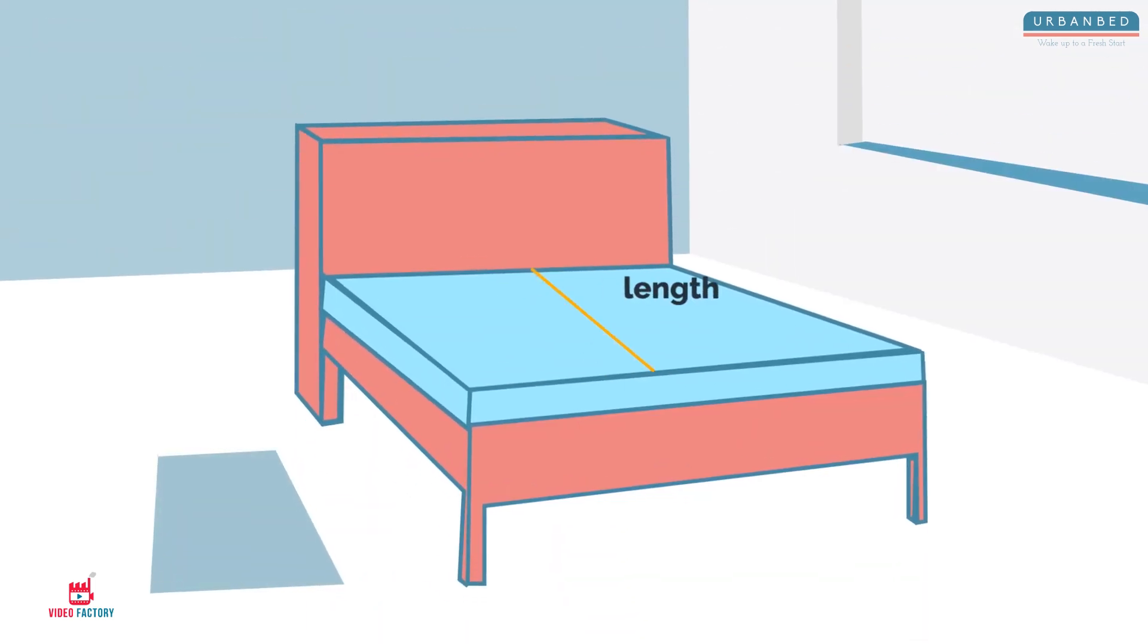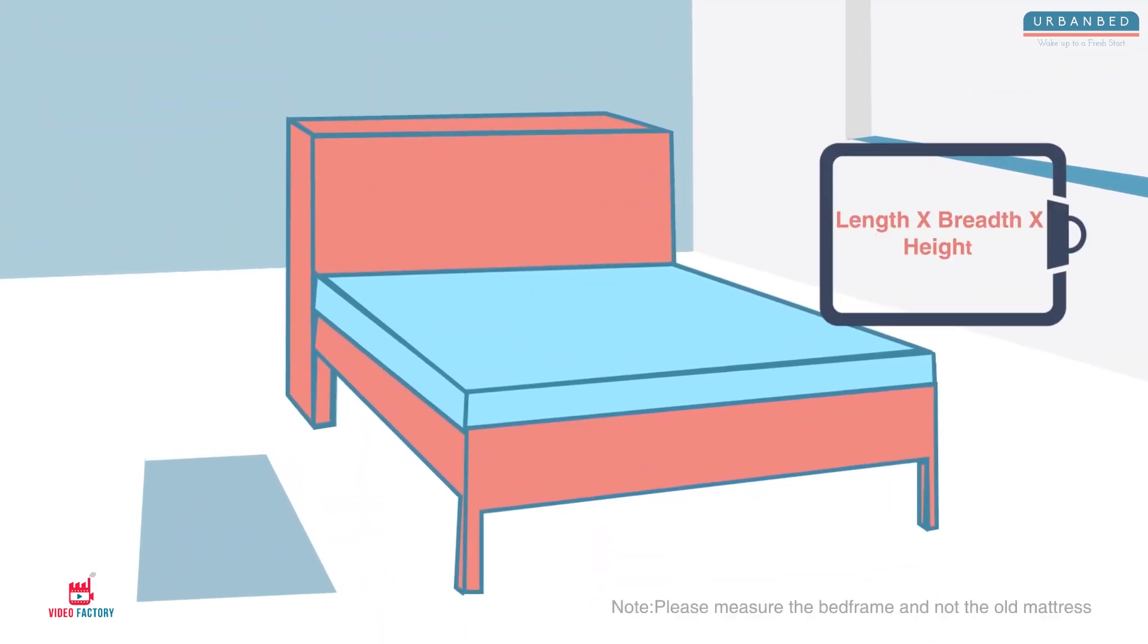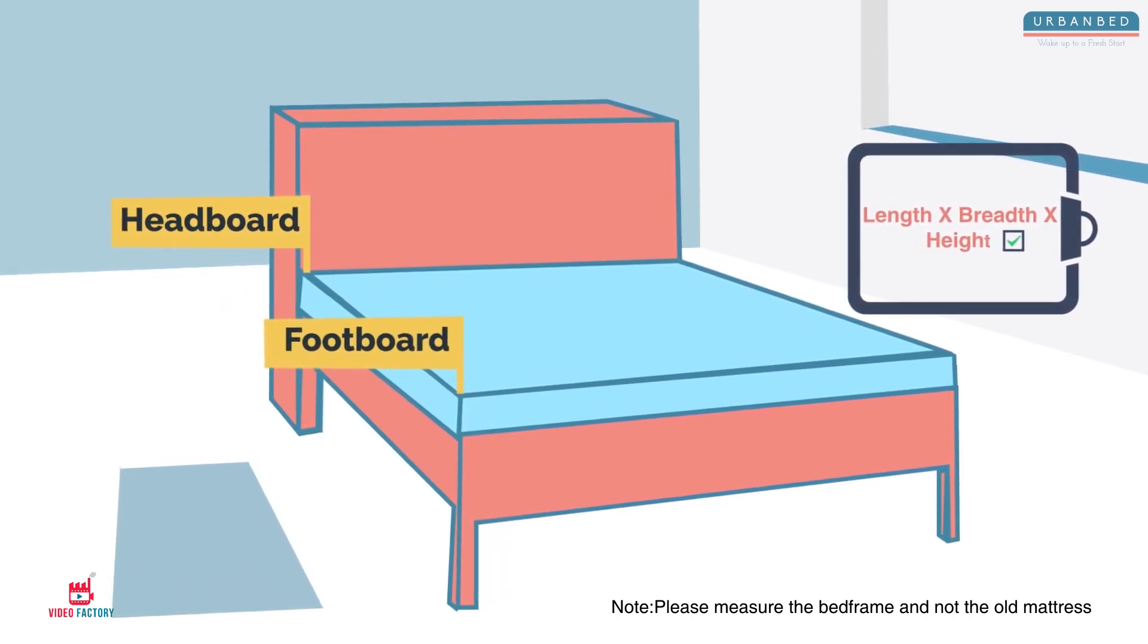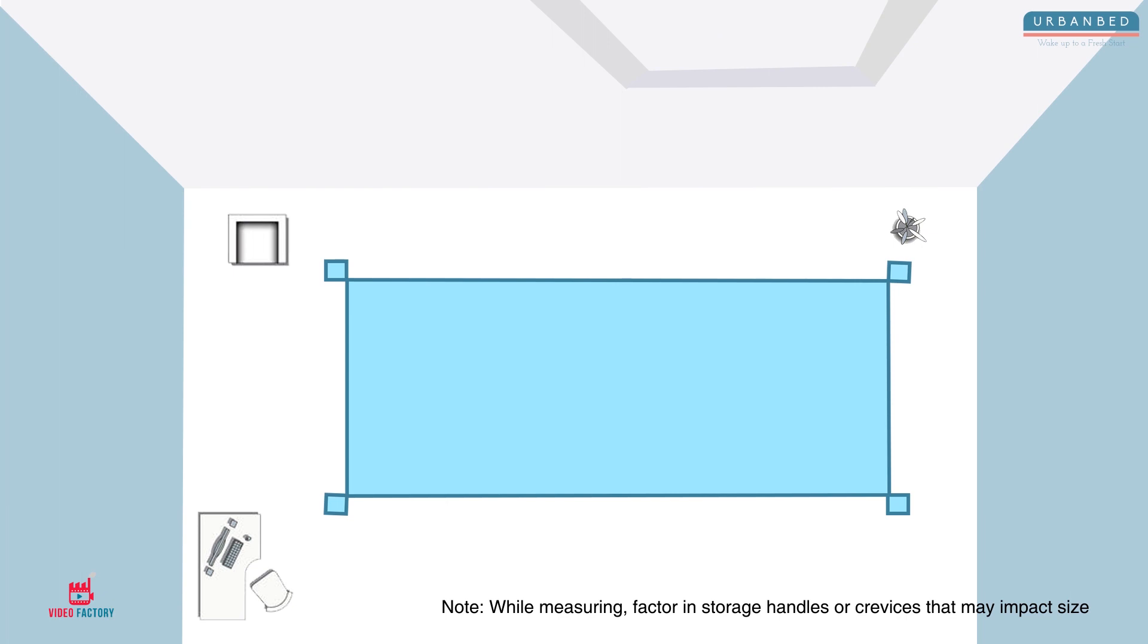Start off by measuring the bed lengthwise. Carefully measure it right from the inner end of the headboard to the inner end of the footboard. If your bed does not have a head or footboard, start measuring it from the outer edges.